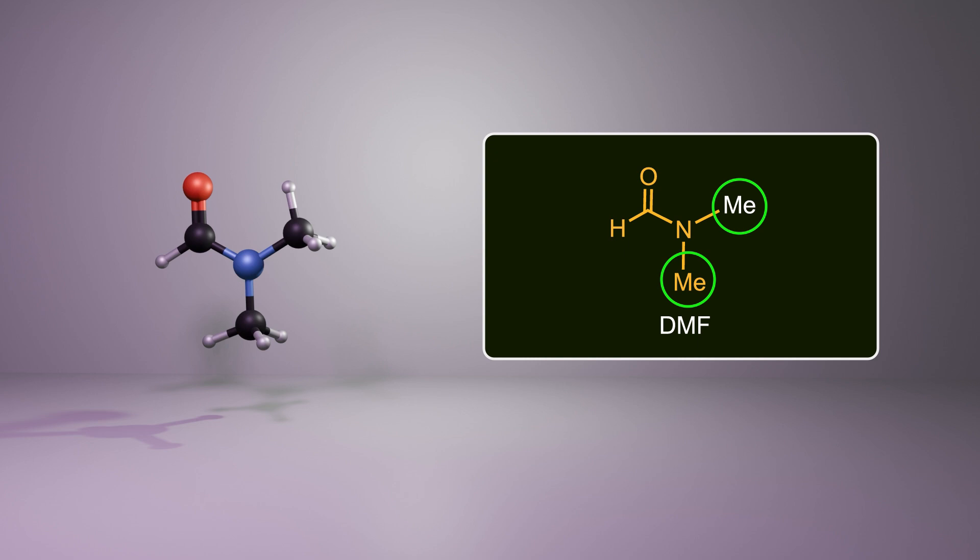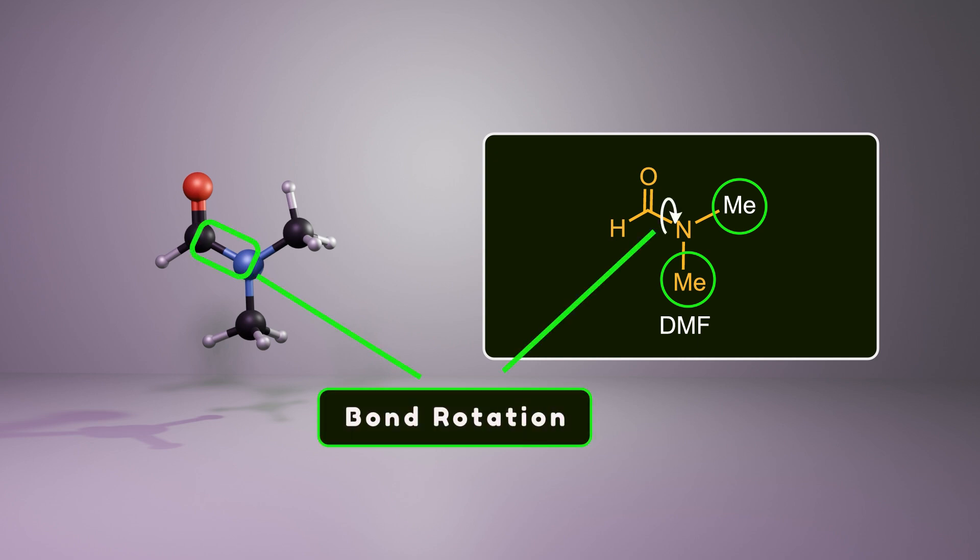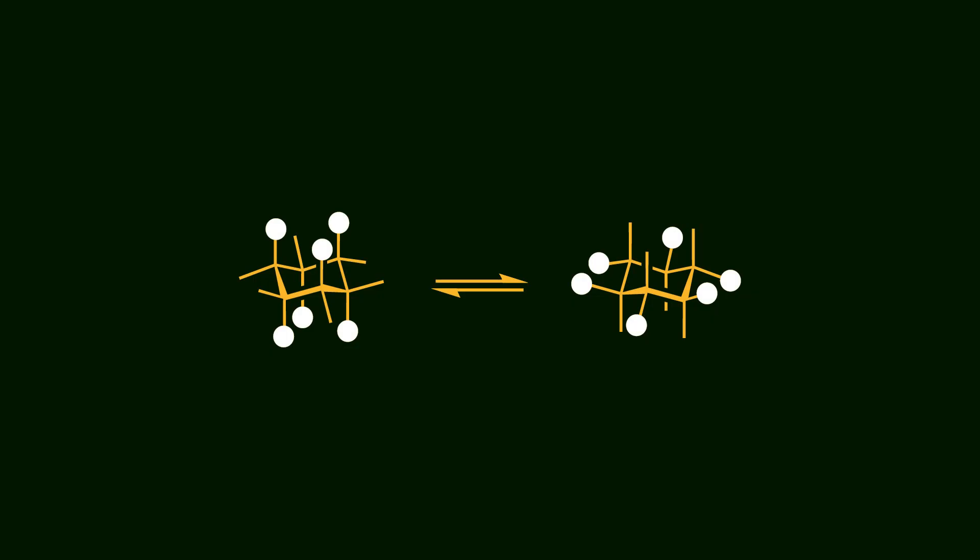However, at temperatures near 100 degrees, we can't distinguish between two methyl groups because they exchange their position very quickly due to bond rotation. Another example is cyclohexane, which exhibits fluxional behavior during the ring inversion process where axial and equatorial hydrogens interchange their positions. So it doesn't have a fixed conformation as we often draw it on paper.